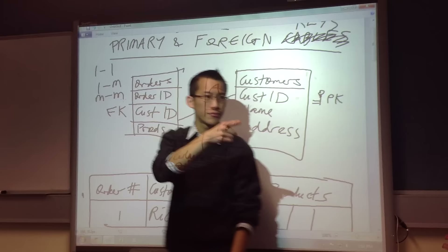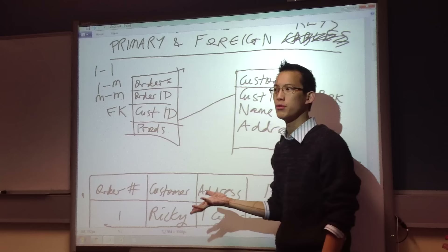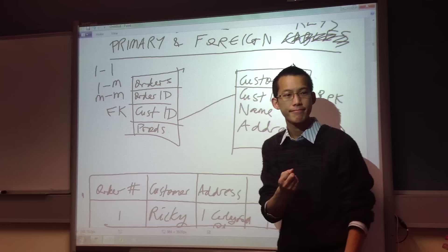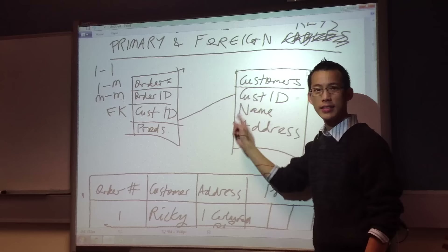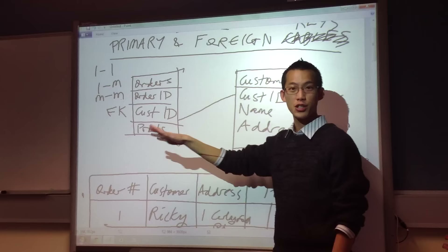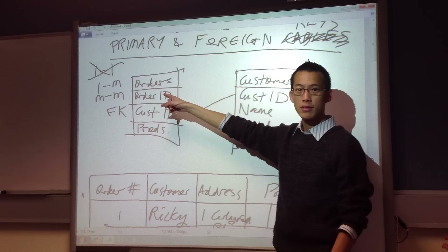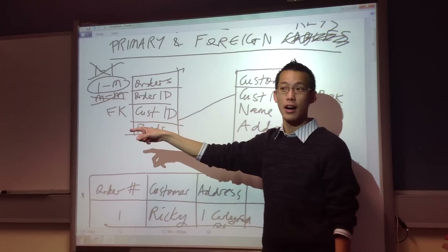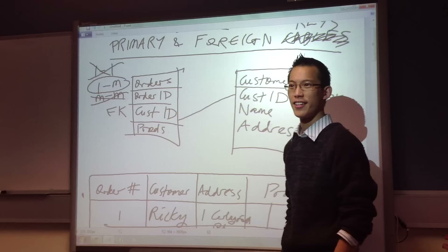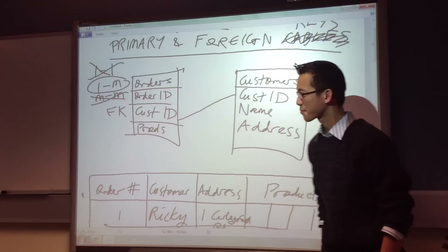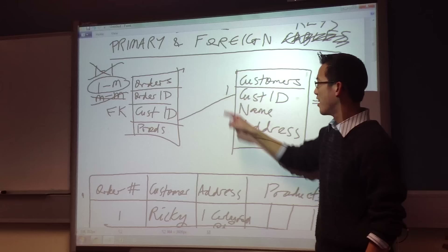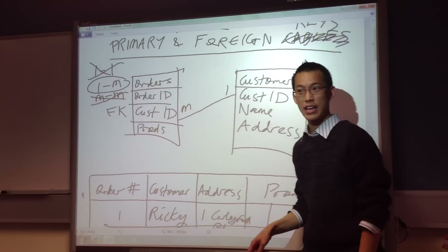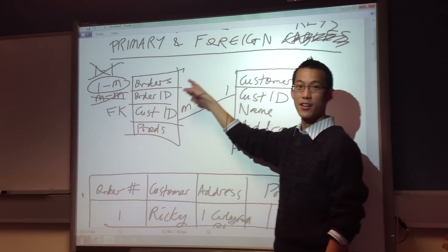One-to-many. Because a customer — there can only be one customer for all the orders they make. One customer can make more than one order, so each customer can have many orders. And for one order, it's one customer making the order — each order is going to be sent to one person. So it's not many-to-many either. One goes on the customers side and many goes on the orders side — one customer has many orders, but orders only have one customer. That's how tables get linked through primary and foreign keys.